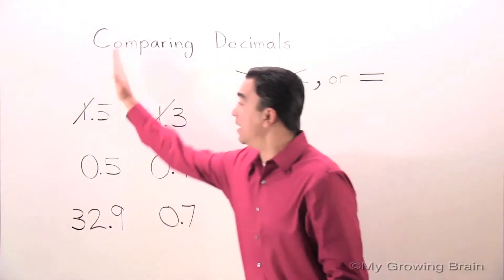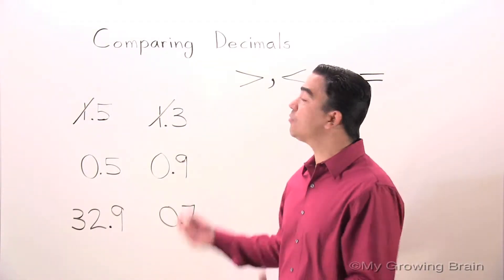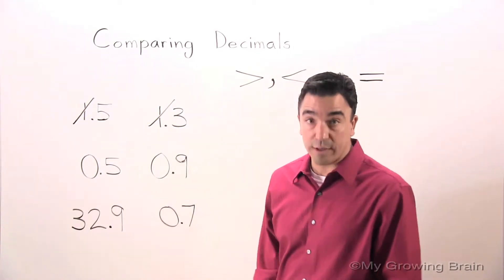Now, we're looking at the tenths place. 5, 3. We both know that 5 is greater than 3. Therefore, 1 and 5 tenths is greater than 1 and 3 tenths.